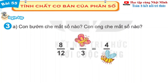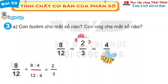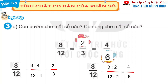Bài 3 câu A: con bướm chia mất số nào, con ong chia mất số nào. 8 phần 12 bằng 8 chia cho 4 trên 12 chia cho 4 bằng 2 phần 3. Vậy con bướm chia mất số 2. Tiếp theo 8 phần 12 bằng 8 chia cho 2 bằng 4, 12 chia cho 2 bằng 6. Vậy con ong đang chia mất số 6. Vậy 8 phần 12 bằng 2 phần 3 và bằng 4 phần 6.